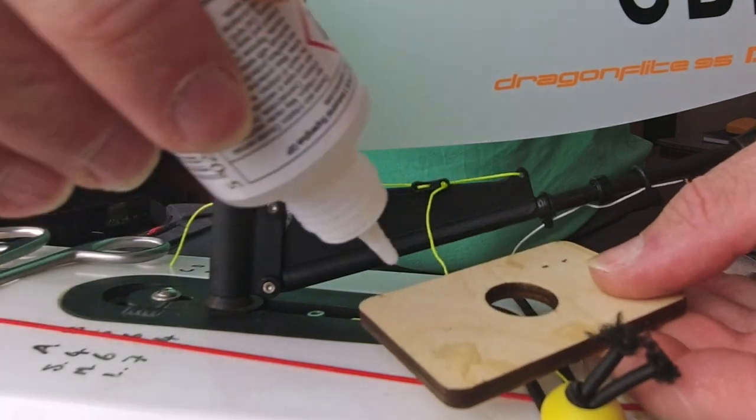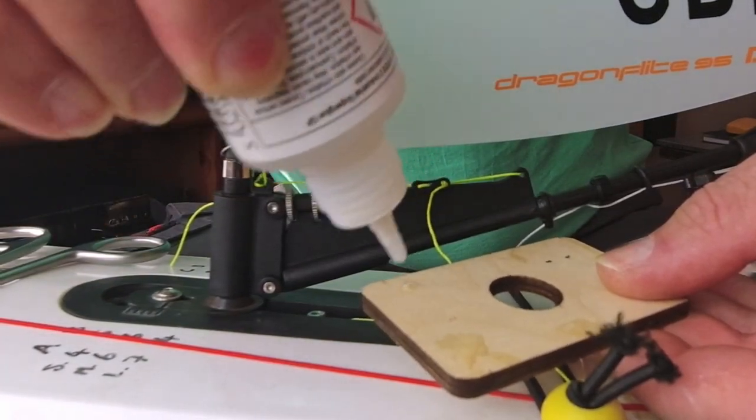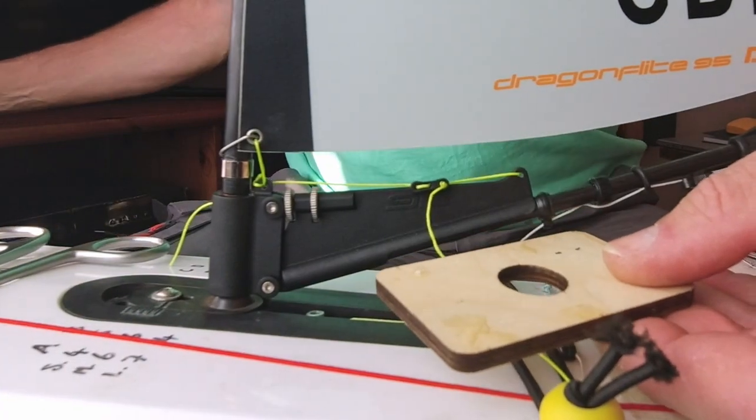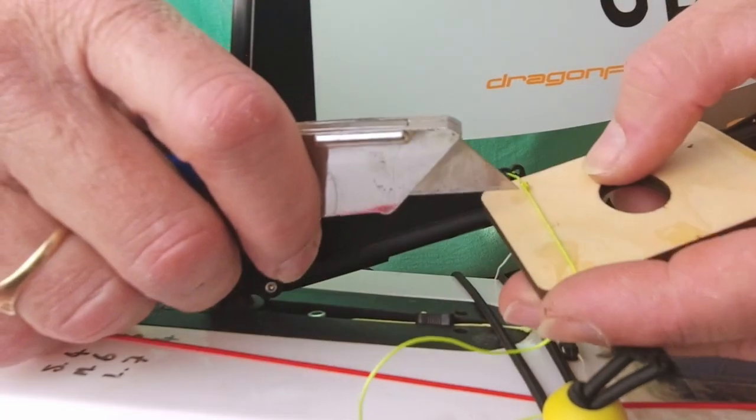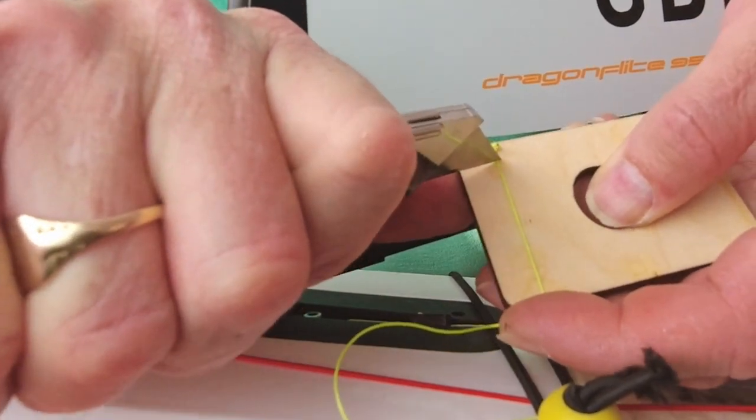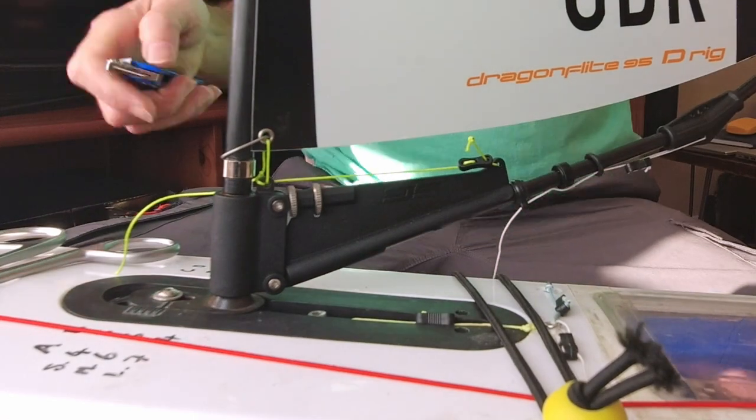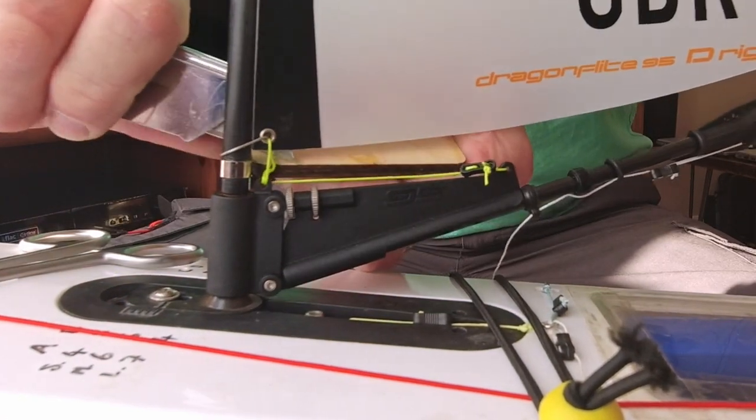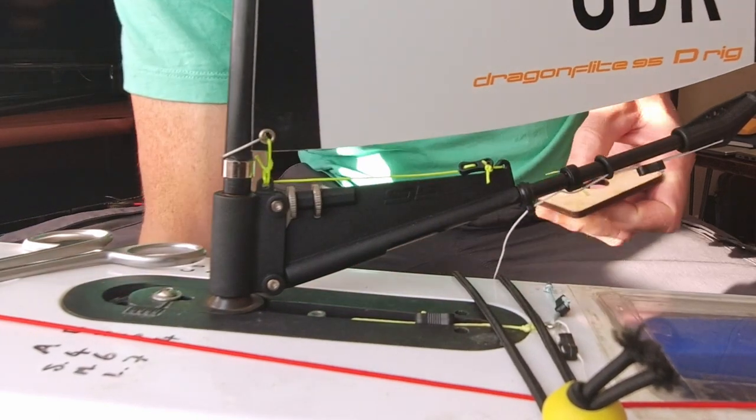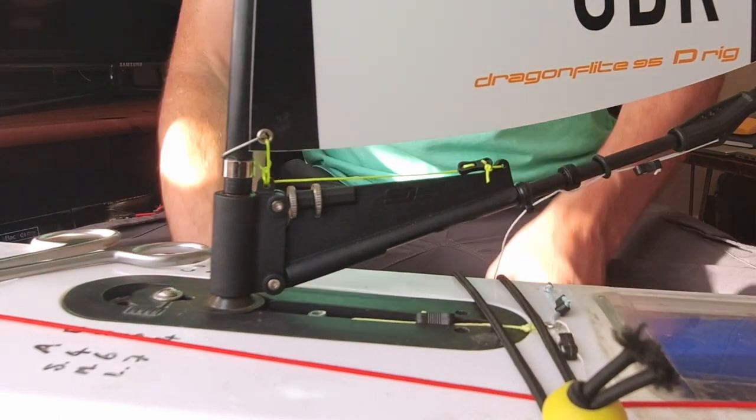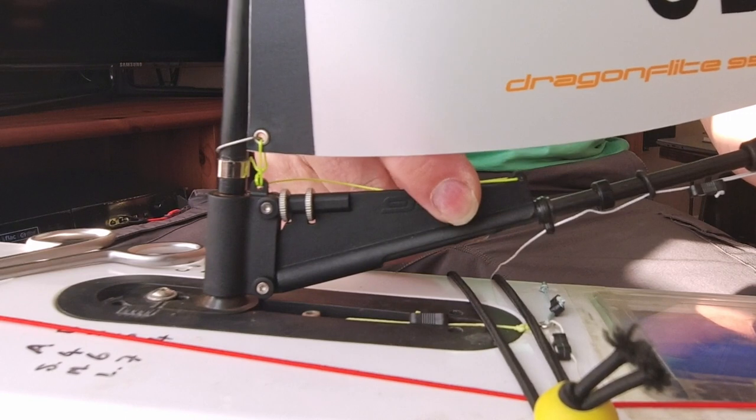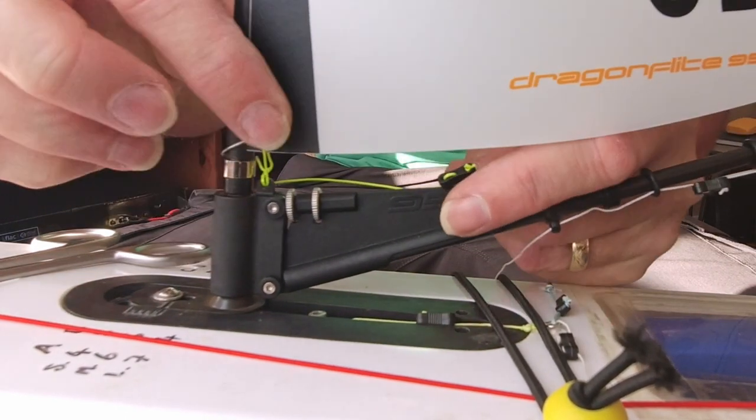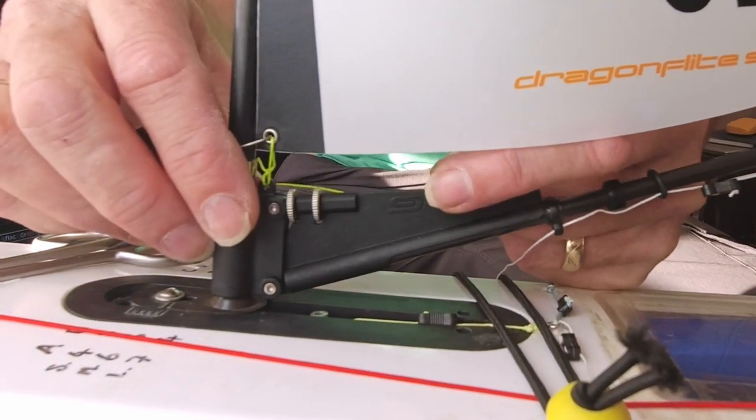Again, tidy the loose ends of dyneema using superglue and a sharp blade. Pull the bousy block towards the mast until the knot reaches the bousy. This now forms the cunningham and is ready to use.